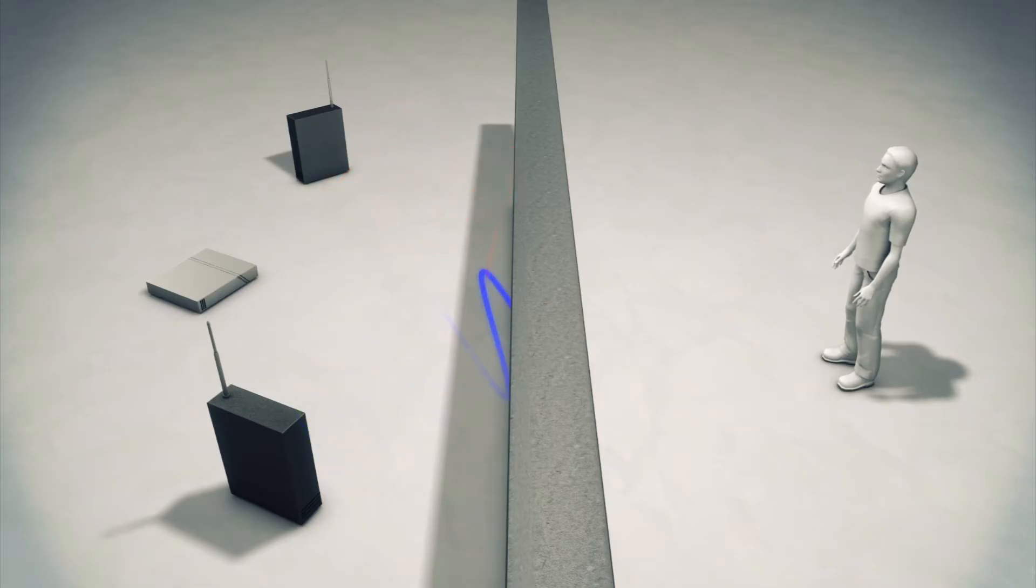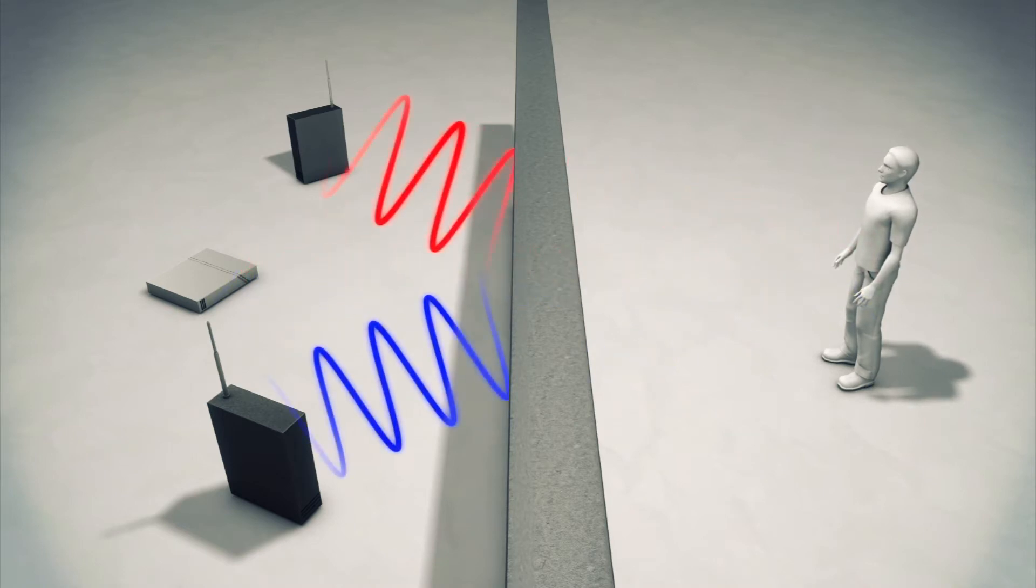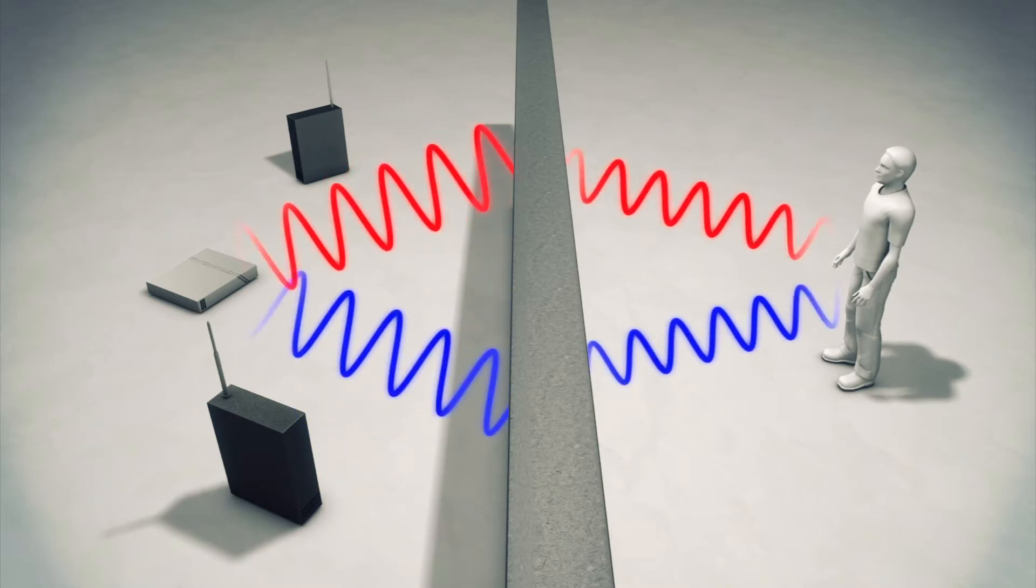YV uses two transmitters and a single receiver. The second transmitter's signal is the inverse of the first. Any identical reflections, such as from static objects, therefore cancel each other out, leaving only moving signals.